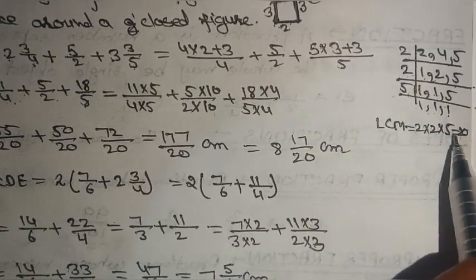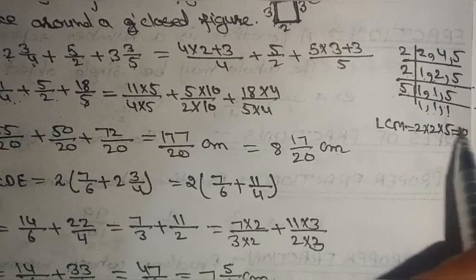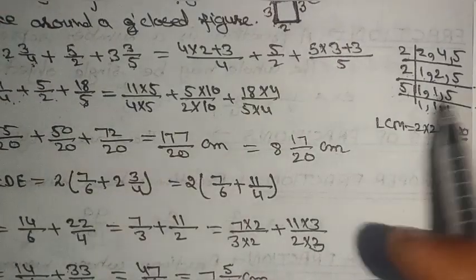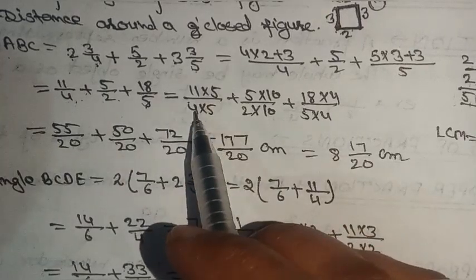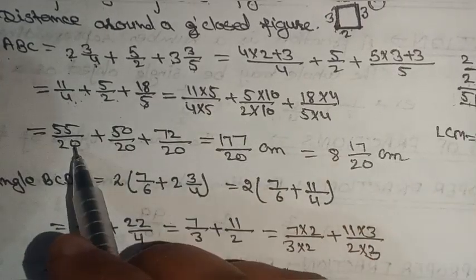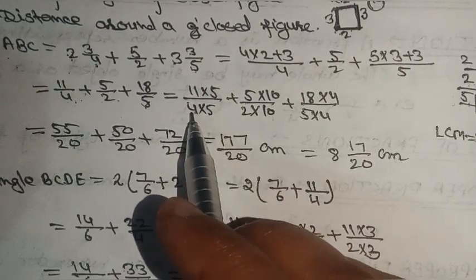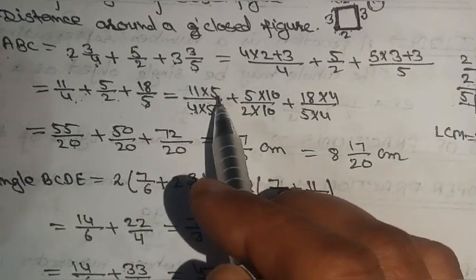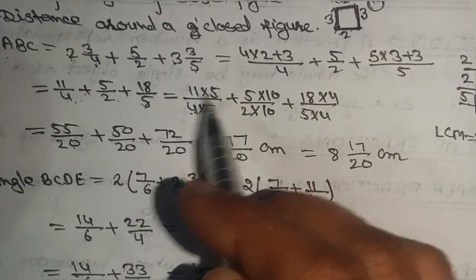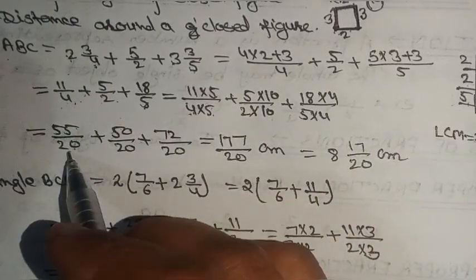We find the LCM of the denominators 4, 2, and 5. Dividing step by step: LCM is 20. So 11/4 becomes 55/20.